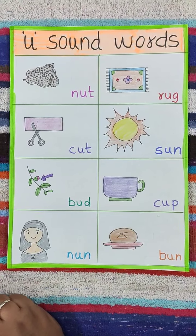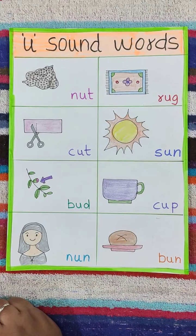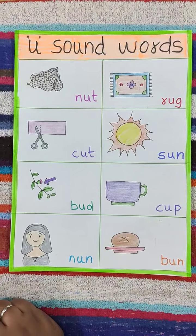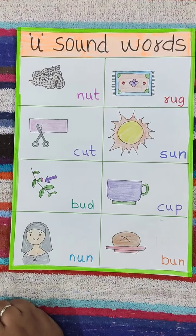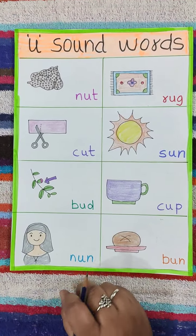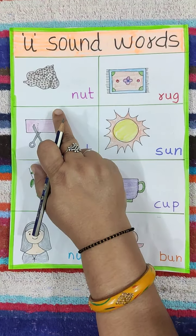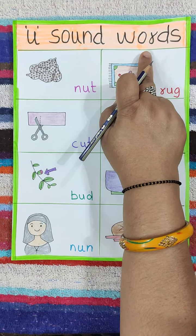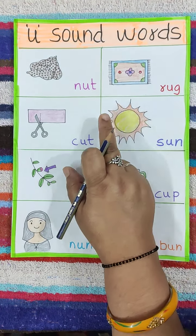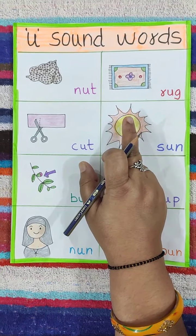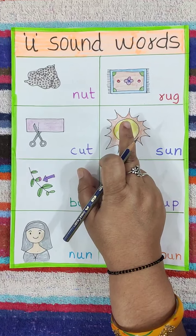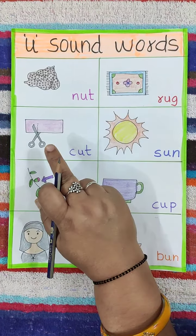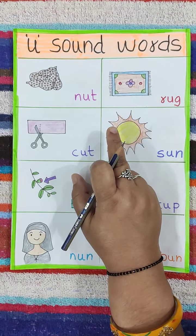Hello children, how are you all? I hope you all are fine and good. Welcome to English class. Today we are going to learn and practice U sound words. In previous classes we have learnt A, E, I, O sound words. So let's start.